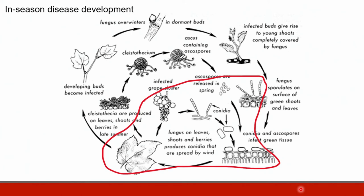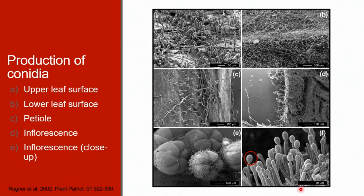Once an ascospore initiates infection, in-season disease development occurs by infections from conidia. Repeated infections can occur all season long, making powdery mildew a polycyclic disease. These images show various tissues of the grape sporulating and producing new conidia. Panel A shows sporulation on the upper leaf surface while Panel B shows sporulation on the lower leaf surface. Panel C is sporulation on a petiole and Panels E and F are sporulation on inflorescence or the flowers.